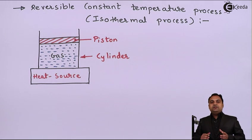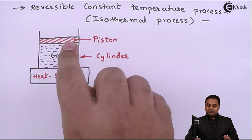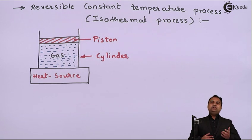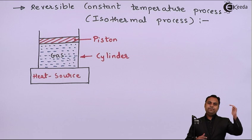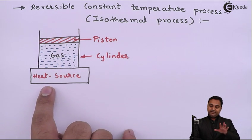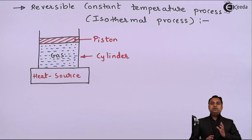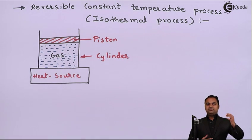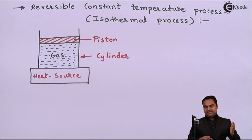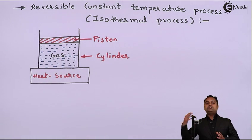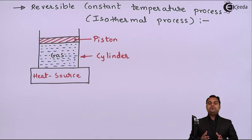The isothermal process can be understood by supposing there is a piston kept over a gas which is trying to expand. When gases expand their temperature drops, so to maintain constant temperature I am drawing a heat source. This heat source will continuously supply high temperature to the gas — when the gas expands and temperature reduces, the heat source raises the temperature back to the initial value, keeping temperature constant during expansion.